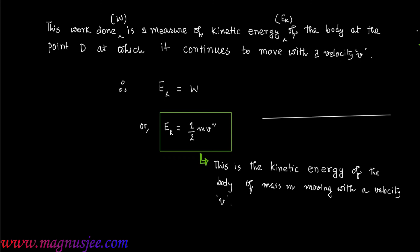Again, if we explain with the diagram: the body was at the point A at rest, meaning u equal to 0, the body has mass M, a force F is acted on the body, the body reaches the point D and velocity increases to v. Here, the kinetic energy of the body is Ek equal 1 by 2 Mv square, that is Ek equal half Mv square.